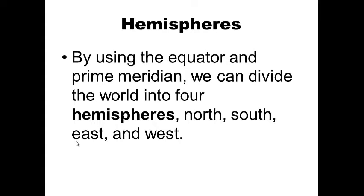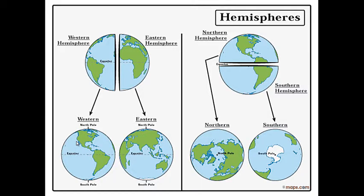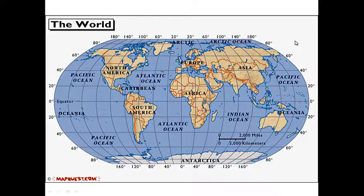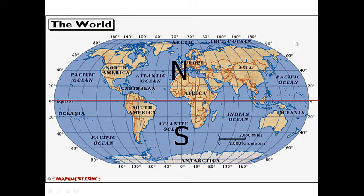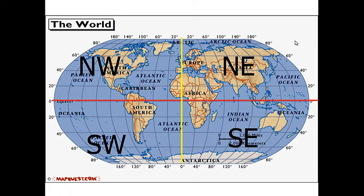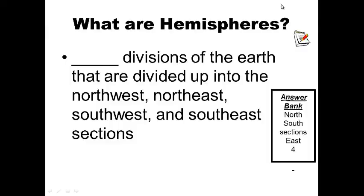If we slice the Earth down the middle with the prime meridian, we get the Western and Eastern hemispheres. If we slice the world in half with the equator, we have the Northern and Southern hemispheres. We also have northwest, southwest, northeast, and southeast — we can break the Earth up into four parts. For your notes on hemispheres, go ahead and pause this while you write, using the answer bank to best complete the sentence.